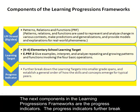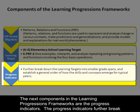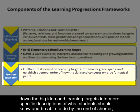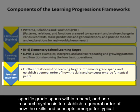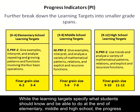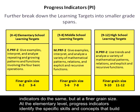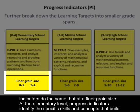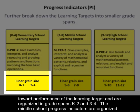The next component in the Learning Progressions Frameworks are the progress indicators. The progress indicators further break down the big idea and learning targets into more specific descriptions of what students should know and be able to do by the end of shorter, specific grade spans within a band, and use research synthesis to establish a general order of how the skills and concepts emerge for typical peers. While the learning targets specify what students should know and be able to do at the end of elementary, middle, and high school, the progress indicators do the same but at a finer grain size. At the elementary level, progress indicators identify the specific skills and concepts that build toward performance of the learning target.